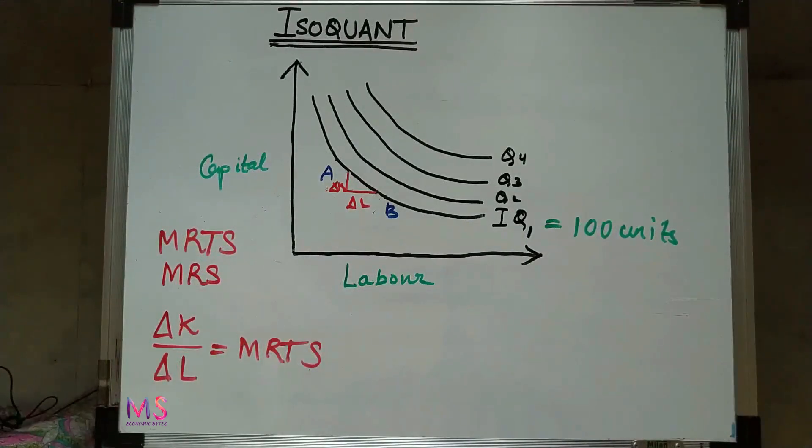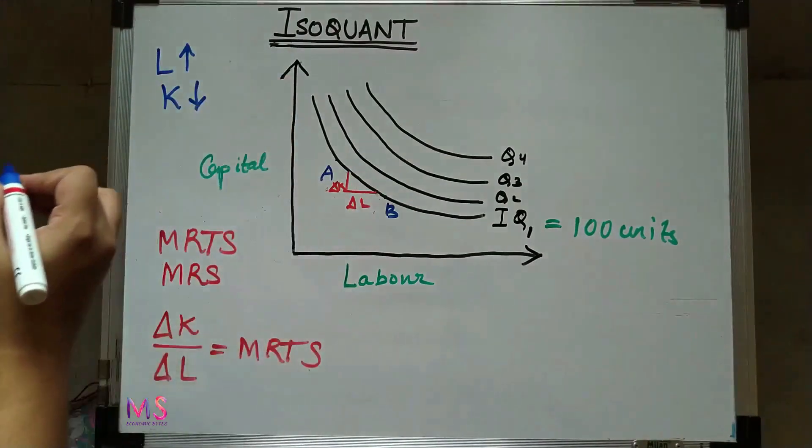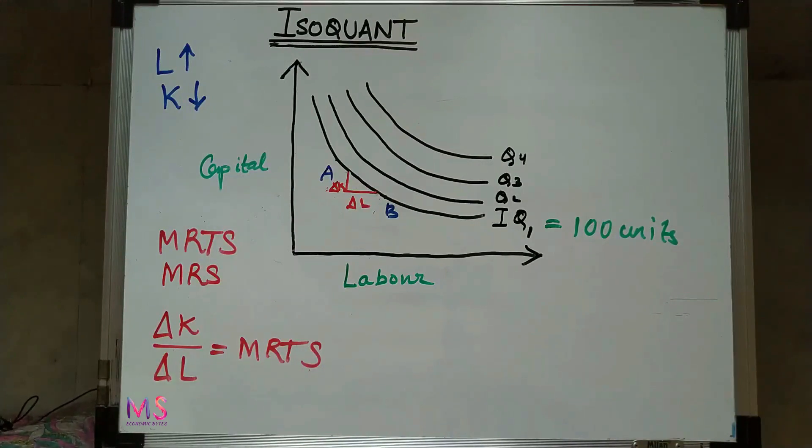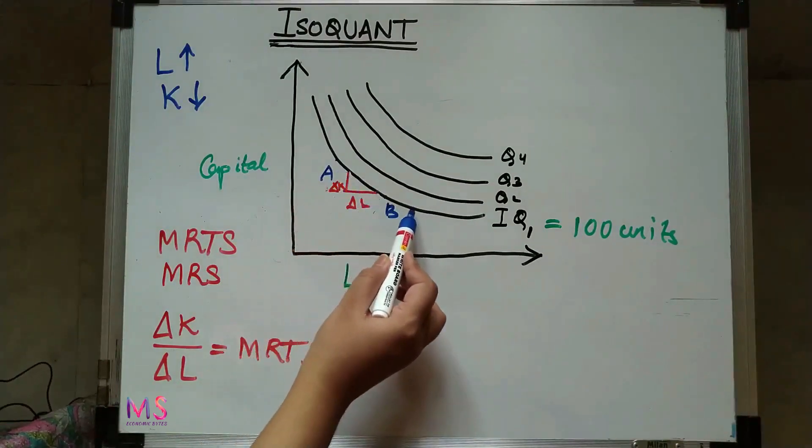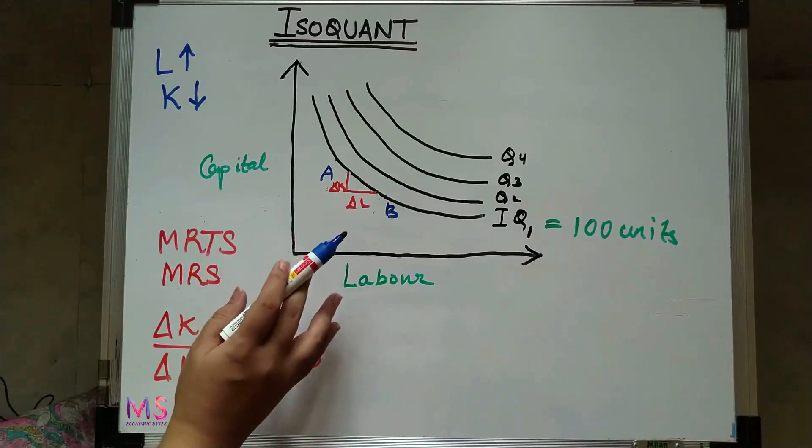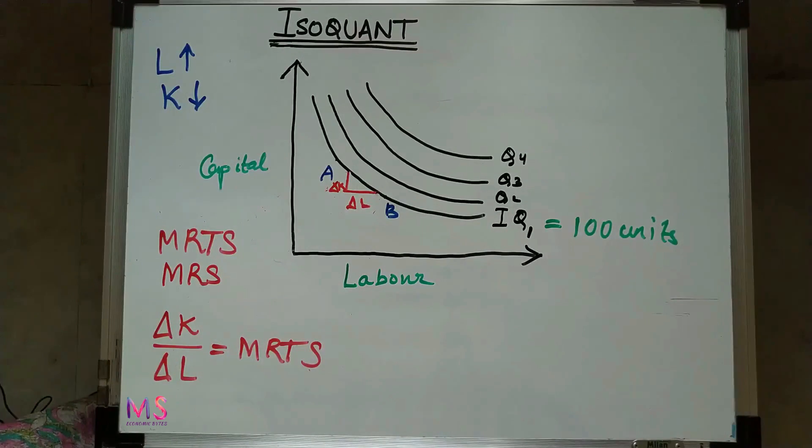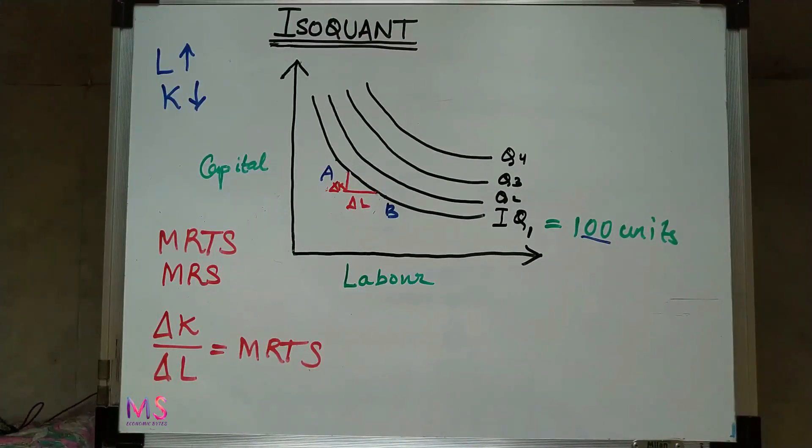An important characteristic of marginal rate of technical substitution is that it diminishes as more and more of labor or capital is used. When more of any factor is substituted for the other factor, suppose labor is increased and capital is reduced. As the quantity of labor used is increased, the quantity of capital employed is reduced, and the amount of capital required to be replaced by an additional unit of labor so as to keep the output constant will diminish. This is known as the principle of diminishing marginal rate of technical substitution.